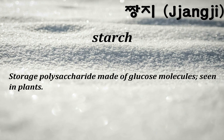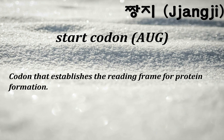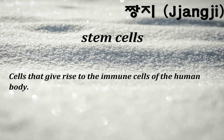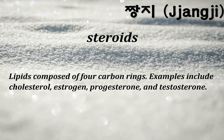Starch: storage polysaccharide made of glucose molecules, seen in plants. Start codon: AUG — codon that establishes the reading frame for protein formation. Stem cells: cells that give rise to the immune cells of the human body. Steroids: lipids composed of four carbon rings; examples include cholesterol, estrogen, progesterone, and testosterone.